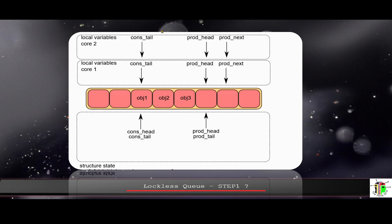Let's look at this data structure. In the middle is the queue we are operating on. The consumer side — the read side — is sitting at object one, and the producer side is the next available free entry where producers will place the next object. To distinguish the players in this algorithm: the first is the structure state, which is the overall state regardless of all threads. Currently the consumer head and tail are at object one, which is where the first object will be consumed, and on the producer side this is the first free entry.